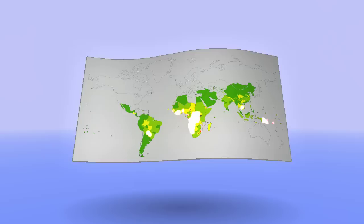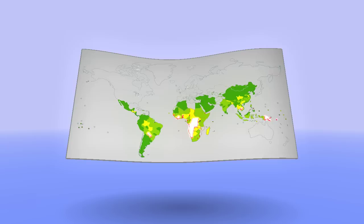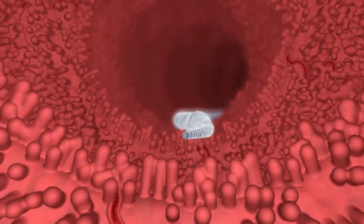Soil-transmitted helminths cause chronic infections in over 2 billion people living in developing countries. Chronic helminth infection is particularly problematic for children and can lead to poor growth, mental impairment and increased susceptibility to other infectious agents such as HIV, malaria and tuberculosis.